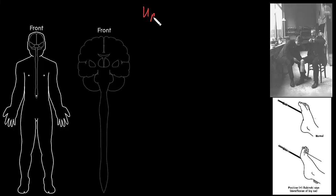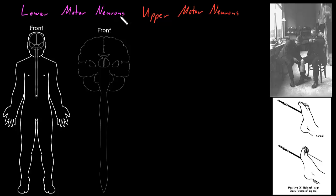In this video, I'm going to talk about upper motor neurons. Upper motor neurons are different from the lower motor neurons we talked about before. Lower motor neurons have their somas either in the brain stem or in the spinal cord, and send axons out through peripheral nerves to synapse on and control skeletal muscle cells. Upper motor neurons are the ones that control the lower motor neurons and their activity.